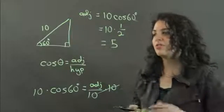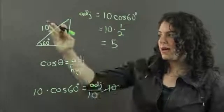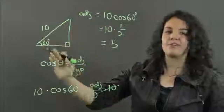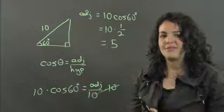So in general, you multiply the hypotenuse by the cosine of your angle to find the adjacent. Thanks for watching.